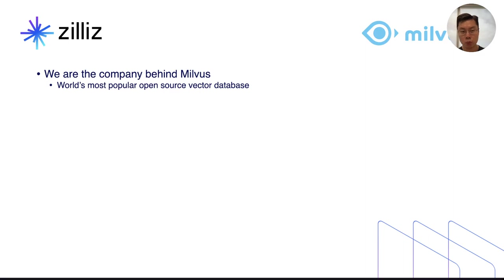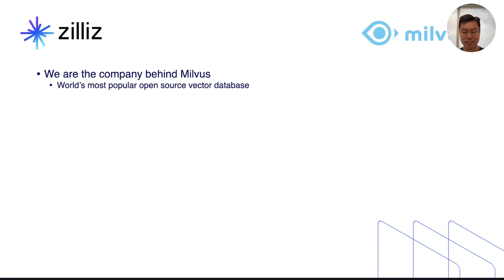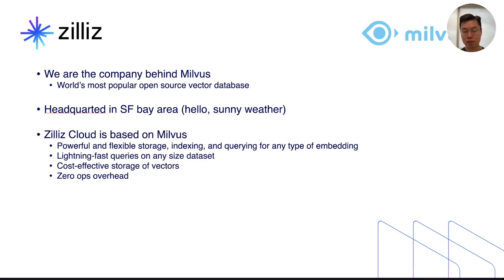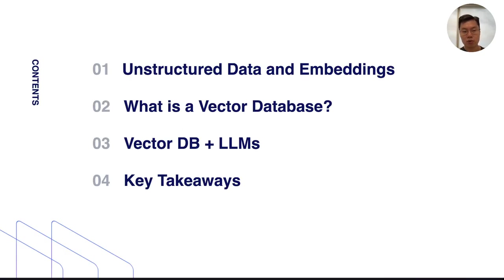A bit about us: we are the company behind Milvus. Milvus is a Linux Foundation — specifically an LFAI Data Foundation — project. It's the world's most popular open source vector database, freely available on GitHub, coming close to 20,000 stars. We're headquartered in the San Francisco Bay Area, and the managed service we provide is called Zilliz Cloud. It's based on Milvus and gives you flexible, powerful storage, search, indexing, and querying for any type of embedding and any dimension, with lightning-fast queries, zero ops overhead, and very cost-efficient storage.